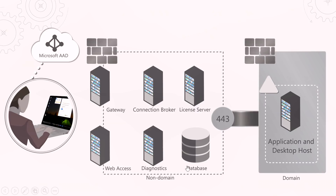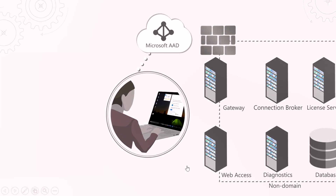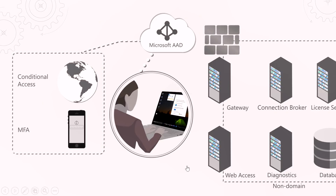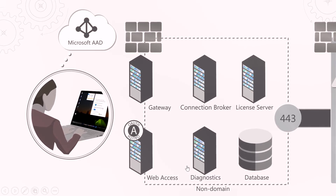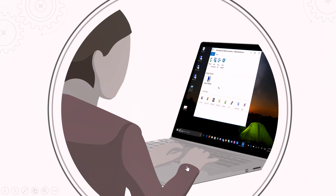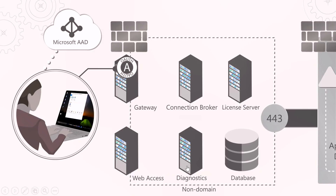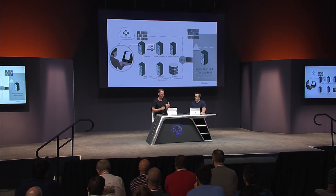Let's go through a typical connection sequence. A user on our client wants to get access to a line-of-business application. Before the user gets access to that list of apps, they must provide credentials. Once they have established their ADAL authentication, they provide that token to the RD web client to get the list of applications. The user selects the specific application they want to launch. We then take that ADAL token and present it into the infrastructure, validate that it is active, and convert that token to a certificate. This is the critical component because it allows a single sign-on experience all the way into the application and desktop hosts.